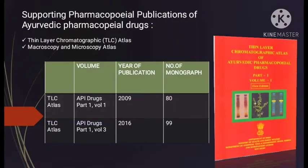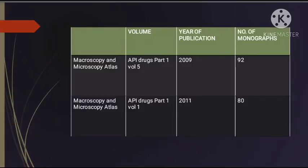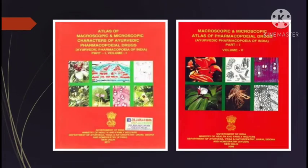Supporting Ayurvedic Pharmacopoeia publications include the Thin Layer Chromatography (TLC) Atlas and the Macroscopy and Microscopy Atlas. TLC Atlas Part 1 Volumes 1 and 3 were published in 2009 and 2016 with 80 and 99 monographs respectively. The Macroscopy and Microscopy Atlas of API drugs Part 1 Volumes 5 and 1 were published in 2009 and 2011 with 92 and 80 monographs respectively.